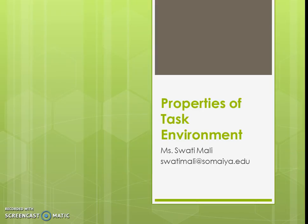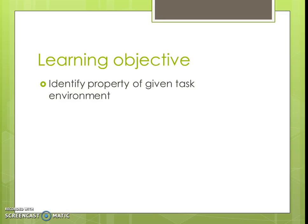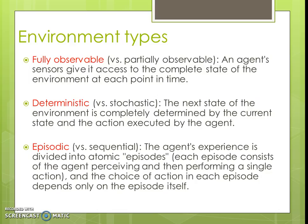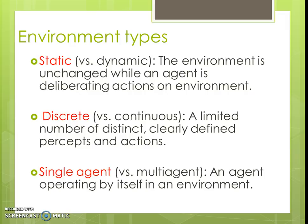Hello, this is Swati Mali and this is a video about properties of task environment in which an intelligent agent is supposed to work. After going through this video, it is expected that given a task environment, students will be able to identify all the properties a task environment has. The properties are typically based on information available in a percept, effect of action on the environment, effect of one action on choice of next action, if the environment changes irrespective of the agent, the number of actions and states possible in any environment, and finally the number of agents possibly present in an environment.